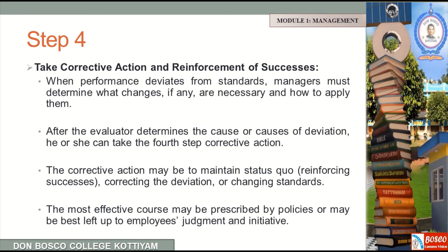So, the four processes of controlling and its functions are: first, set standards; second, measure actual performance; third, compare actual performance with standards; and last, take corrective actions based on the comparison and deviation. This is the controlling function of management.